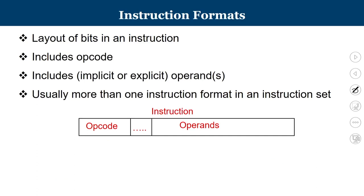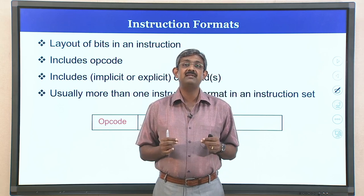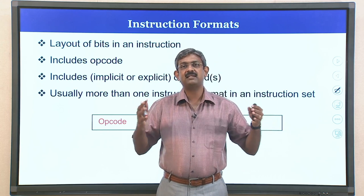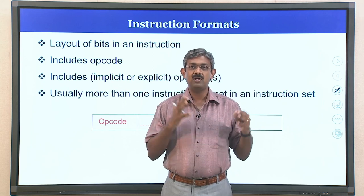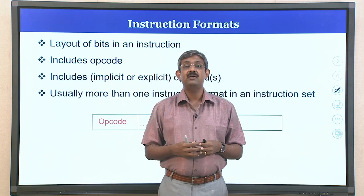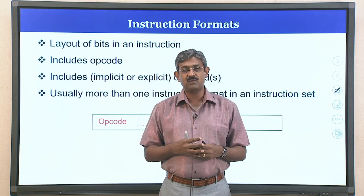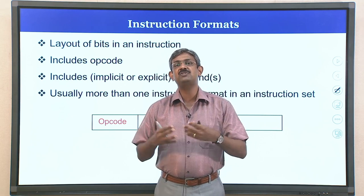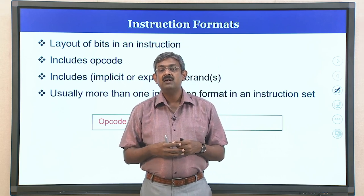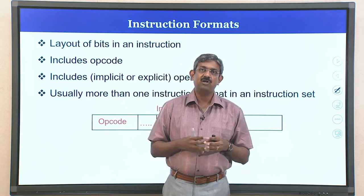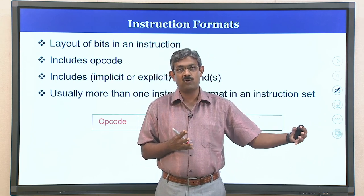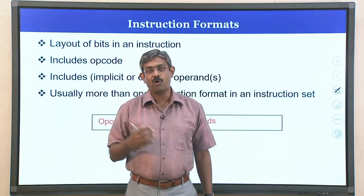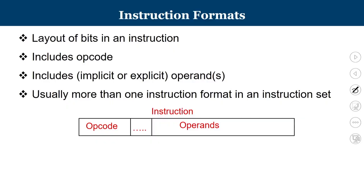Now we move to the instruction format. The format of an instruction typically means what is the layout of the bits inside an instruction — which bits represent the opcode and which represent the operand, and how many operands are there. In implicit or stack addressing mode, we need not explicitly specify where the operand is. For CISC architecture, we can have multiple instruction formats; it need not be that the first n bits are always the opcode — for certain categories, the last few bits may be the opcode. So it can be variable encoding rather than fixed encoding.